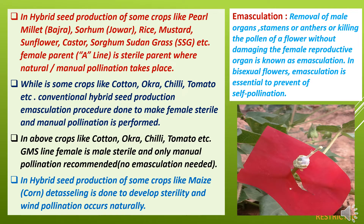A line is the sterile parent in hybrid seed production of crops like pearl millet, bajra, sorghum (jawar), rice, mustard, sunflower, castor, and sorghum sudan grass, where natural pollination takes place. In sunflower, the female A line is sterile and manual pollination is done by hand with laborers. In crops like cotton, okra, chili, and tomato, conventional hybrid seed production uses emasculation to make the female sterile, after which pollination is done manually by laborers.